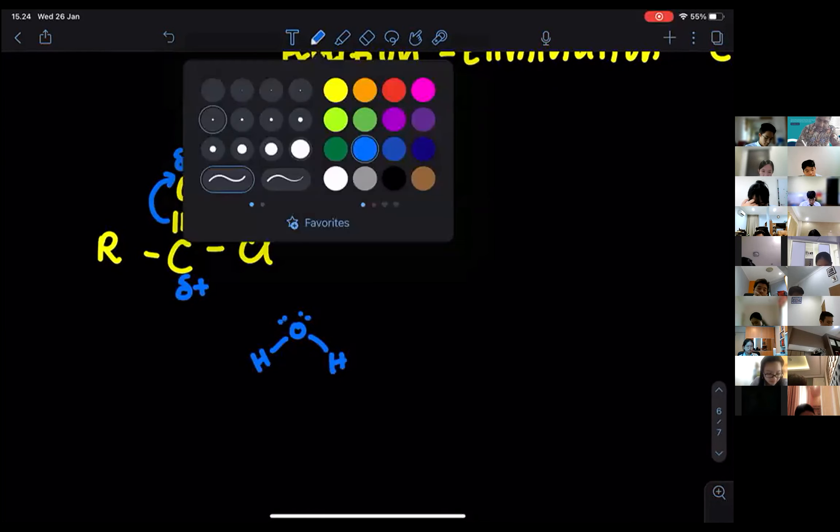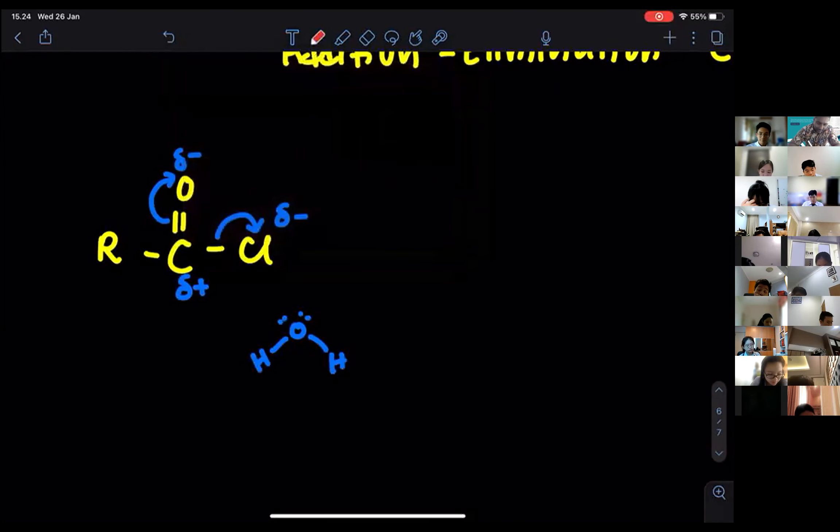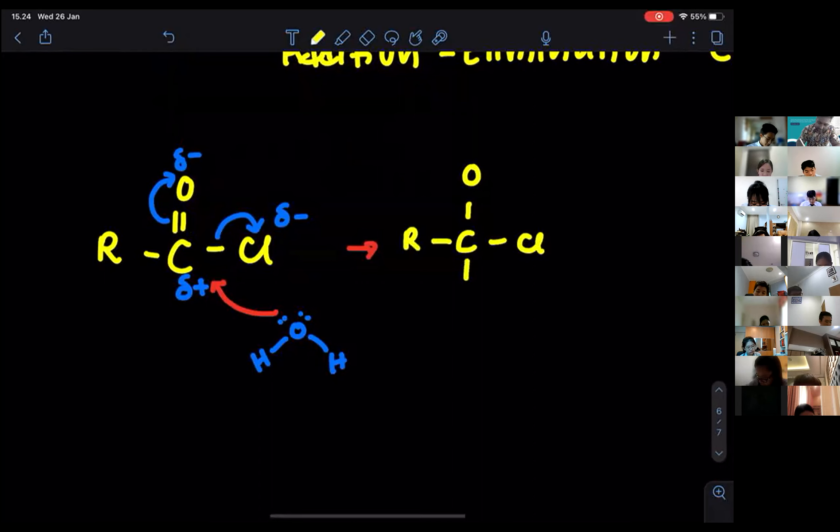So what happens when you draw movement of arrow towards the carbon, so you put over there, what am I going to get? I am going to get, I need to write everything. C, there is O, there is Cl, there is R, then there is O, H, H, you write everything.